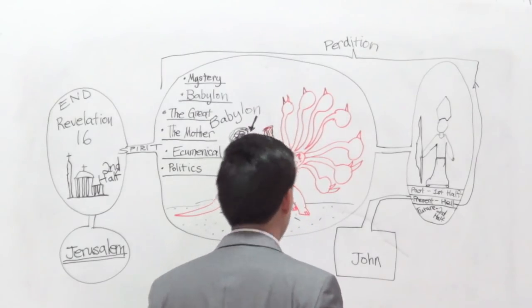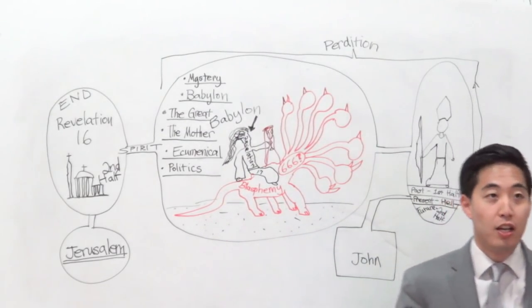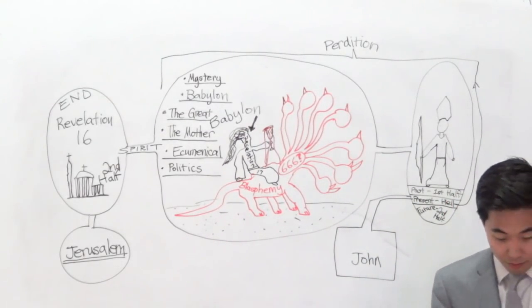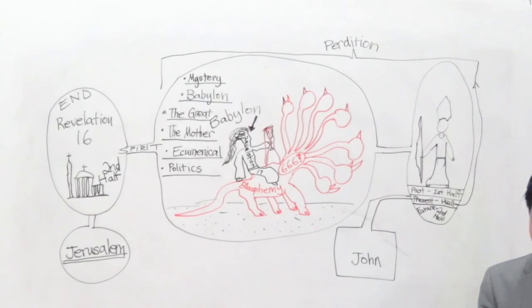For this one, I am going to draw an arrow all the way over here so that we don't get lost. Present tense that John is in is referring to all of this. And that is perdition, a timeline where the Antichrist is going to hell or perdition.